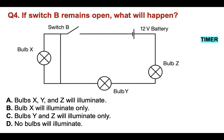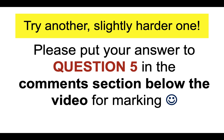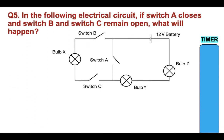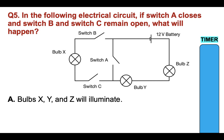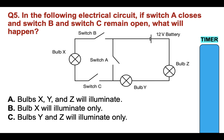I want to work through a couple more of these diagrammatic ones. Please put your answer to question five in the comments section below the video for marking. In the following electrical circuit, if switch A closes and switch B and C remain open, what's going to happen? A, bulbs X, Y and Z will illuminate; B, bulb X will illuminate; C, bulbs Y and Z will illuminate only; or D, no bulbs will illuminate. Put your answer in the comments section below the video.